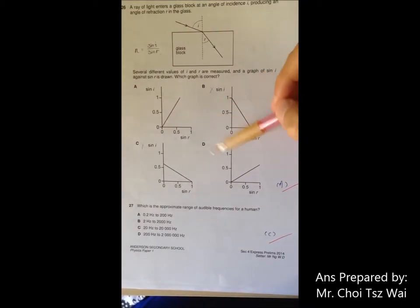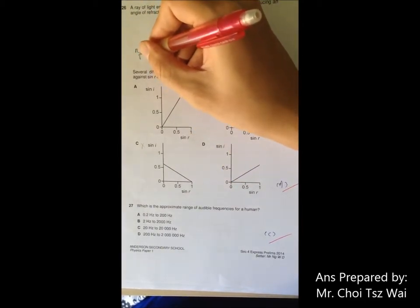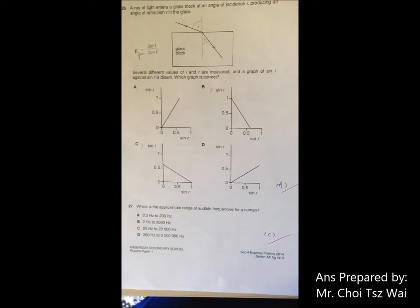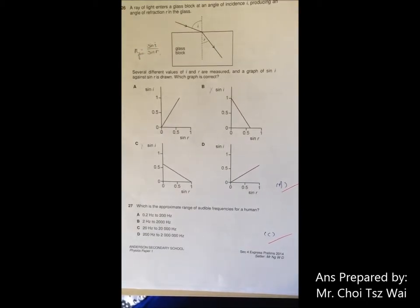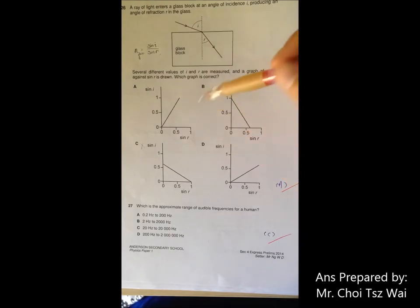Now, how do you choose between A and D? This n equals sine i over sine r—this n is the refractive index of the glass. You know that the refractive index of the glass is definitely larger than the refractive index of air. The refractive index of air is equal to 1, and the refractive index of glass is definitely more than 1.